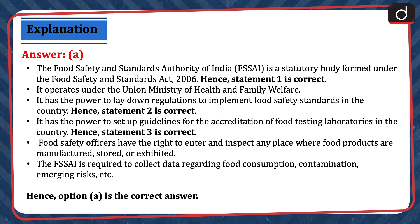The Food Safety and Standards Authority of India is a statutory body formed under the Food Safety and Standards Act, 2006. Hence, statement 1 is correct. It operates under the Union Ministry of Health and Family Welfare. It has the power to lay down regulations to implement food safety standards in the country. Hence, statement 2 is correct. It has the power to set up guidelines for the accreditation of food testing laboratories in the country. Hence, statement 3 is correct. Food safety officers have the right to enter and inspect any place where food products are manufactured, stored, or exhibited. The FSSAI is required to collect data regarding food consumption, contamination, emerging risk, etc. Hence, option A is the correct answer.